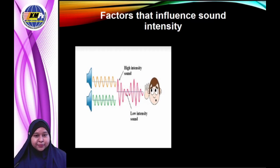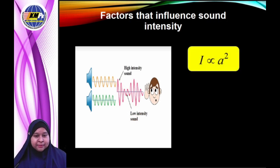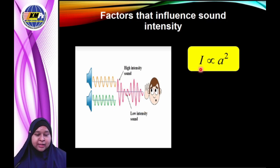What influences sound intensity? Greater amplitude waves have more energy and greater intensity, so the sound is louder. You can see that higher or greater amplitude gives higher intensity, and lower amplitude gives low intensity sound. For example, when you turn down the volume of the radio, you reduce the energy carried by the sound wave, and so you also reduce the intensity. Intensity is directly proportional to the amplitude squared.